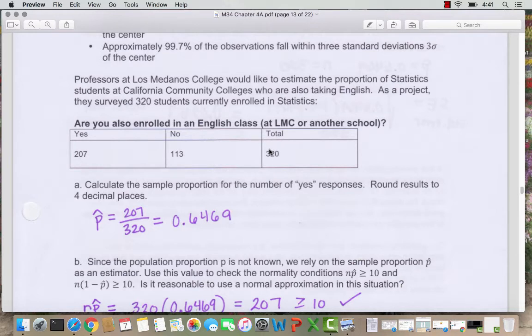So we want the sample proportion for the number of yes responses. So this 207 out of 320 is our p-hat, as the decimal is 0.6469. If you wanted to make it a percent, you could say 64.69%.